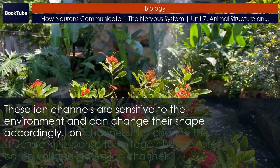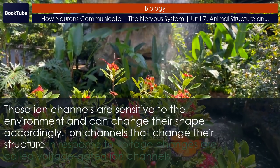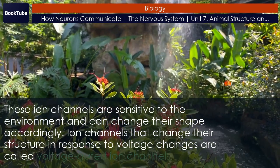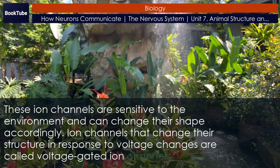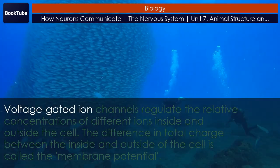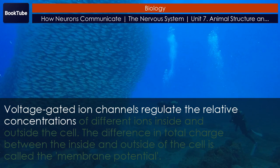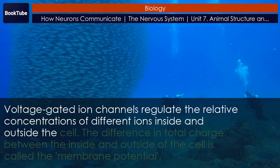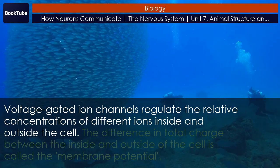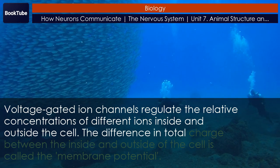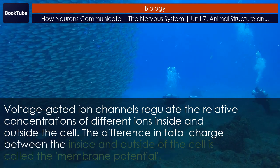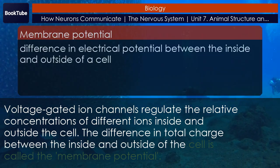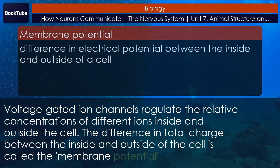Ion channels that change their structure in response to voltage changes are called voltage-gated ion channels. Voltage-gated ion channels regulate the relative concentrations of different ions inside and outside the cell. The difference in total charge between the inside and outside of the cell is called the membrane potential.